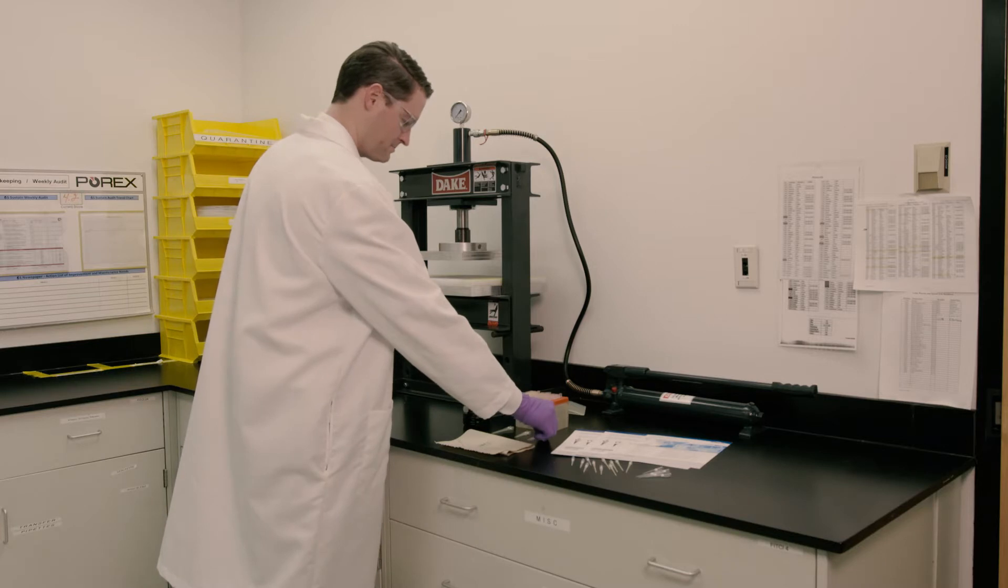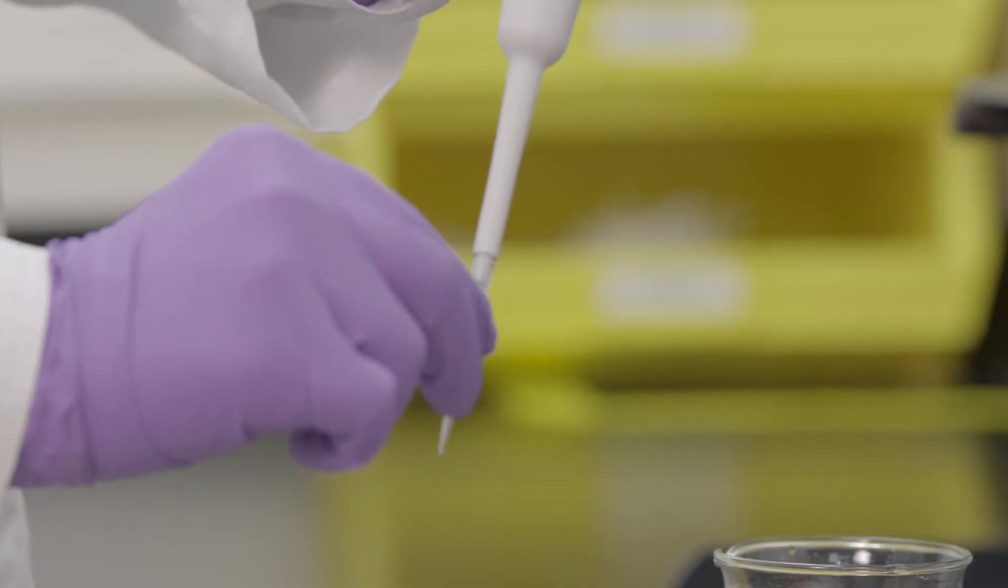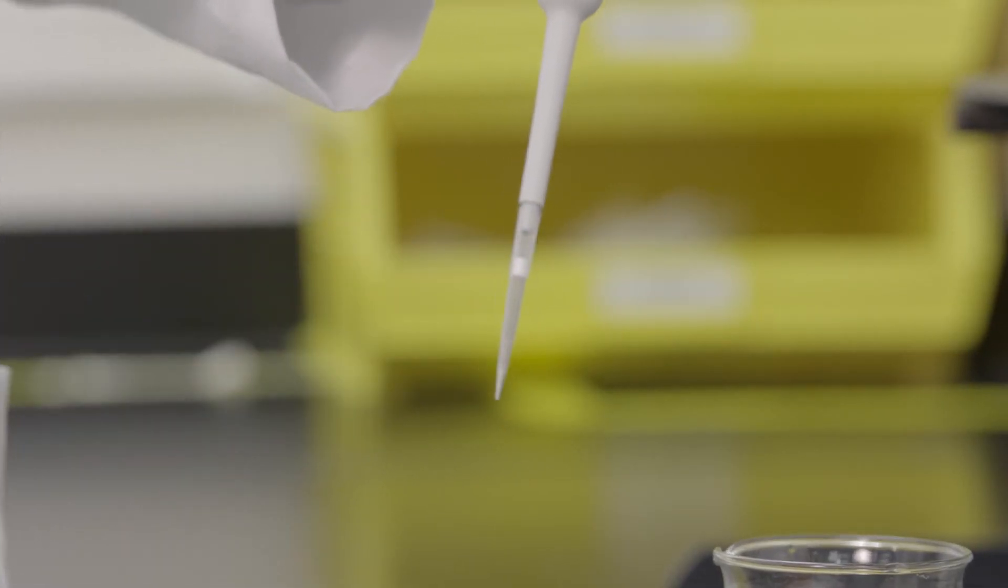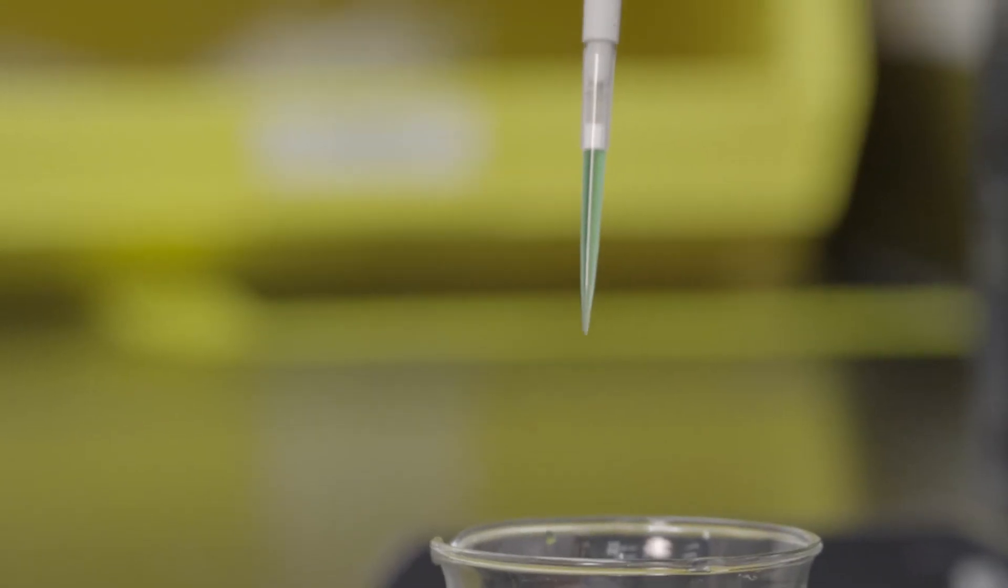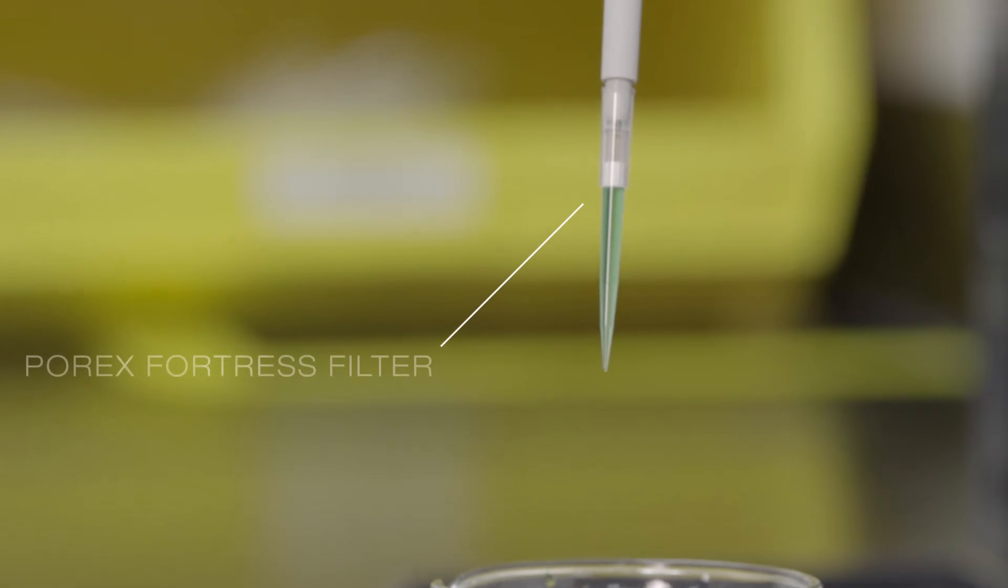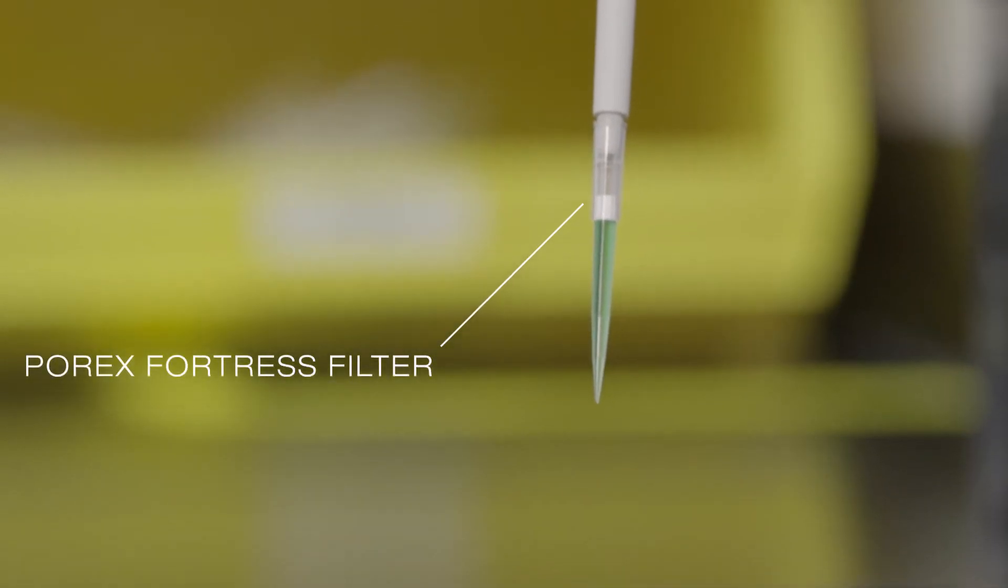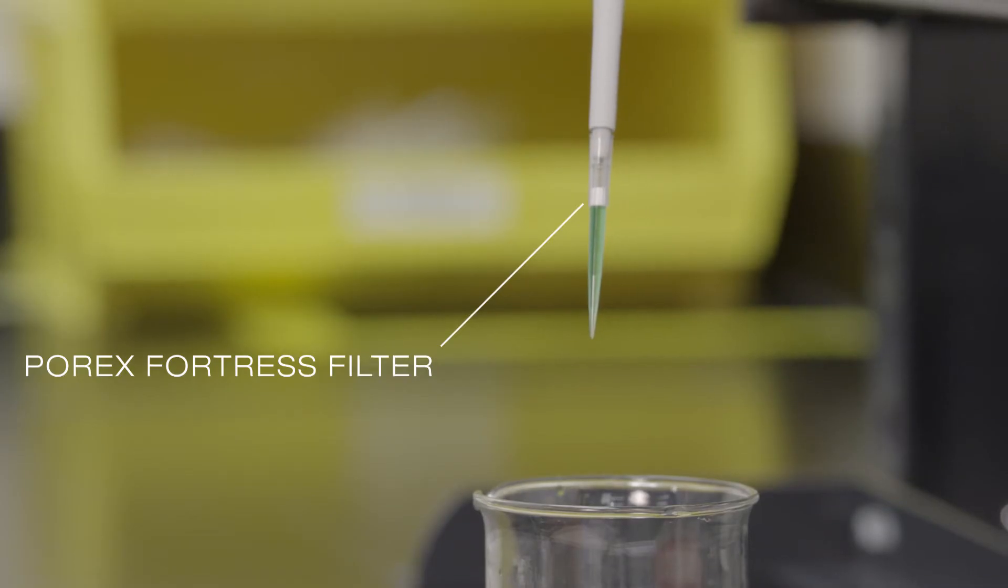The third demonstration is with the Porex Fortress filter. Watch one more time as we aspirate the 300 UL. Now, as you can see, the green sample does not go through the filter. The Fortress filter has stopped both aerosols and the green sample from getting through to the pipetter shaft.